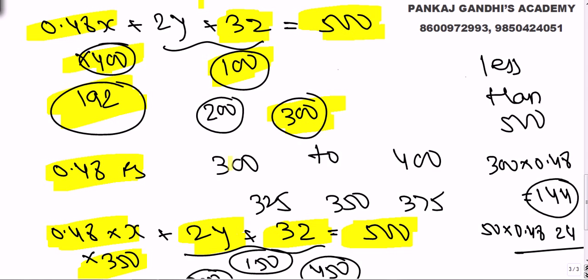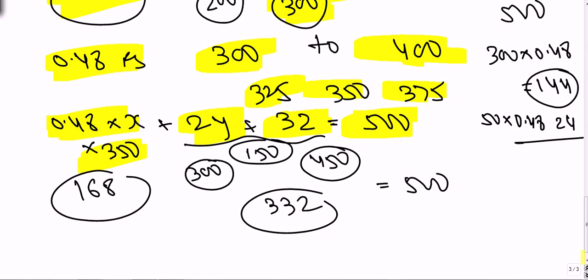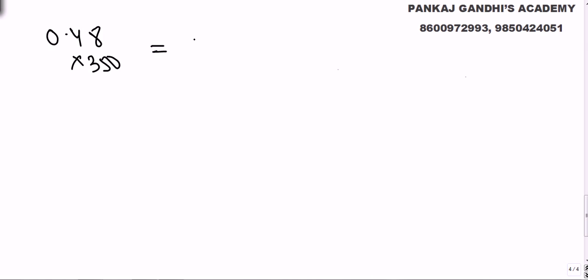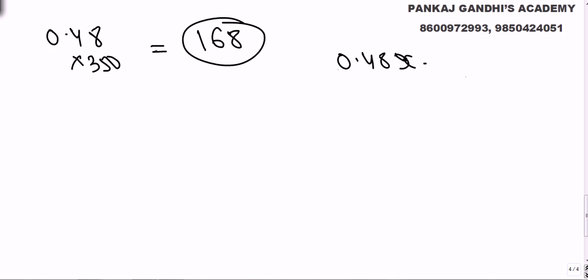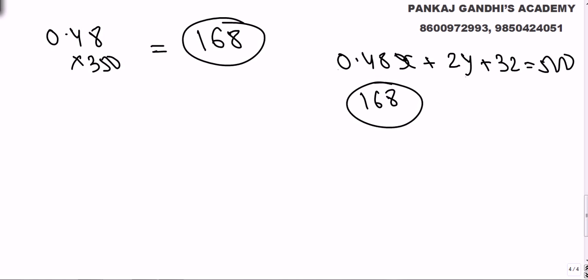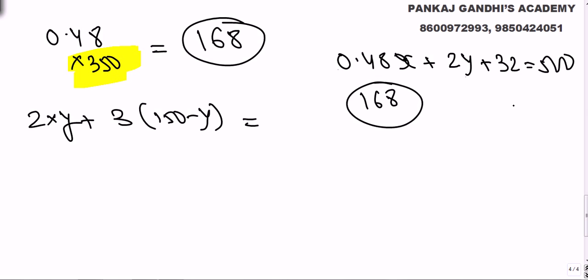Trying x = 350: 350 × 0.48 = 168 rupees. Remaining 150 stamps of 2 and 3 rupees combined. If all 150 at 2 rupees that's 300 — less than 332 remaining amount. If all at 3 rupees that's 450 — more than 332. So it works. Let y = number of 2-rupee stamps and (150 − y) = number of 3-rupee stamps.